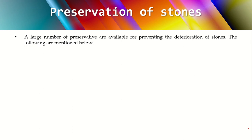Before applying a preservative, an ideal preservative should have some important qualities. It should not allow any moisture content to penetrate into the surface of the stone. It should not develop any objectionable color. It should harden sufficiently to resist the effects of various atmospheric agents like wind, precipitation, and frost. It should also be easily penetrated into the stone surface.